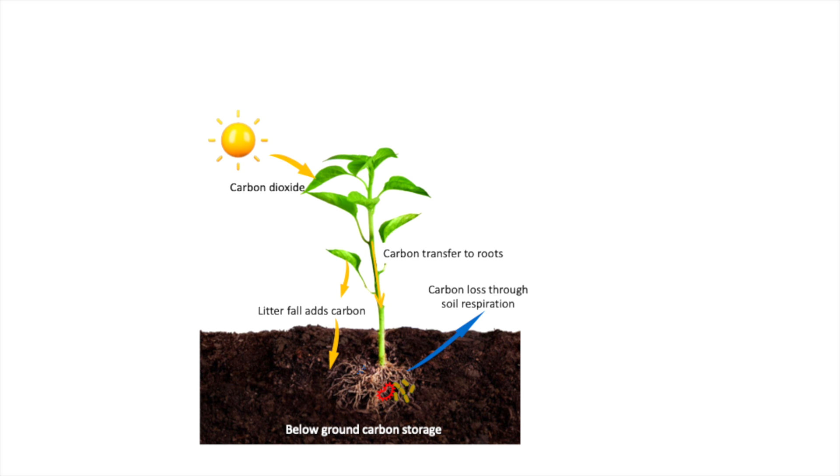The microorganisms in the soil decompose organic residues such as falling leaves, branches, and roots, releasing carbon deep into the soil. During this process, soil microorganisms release carbon dioxide into the atmosphere through respiration.